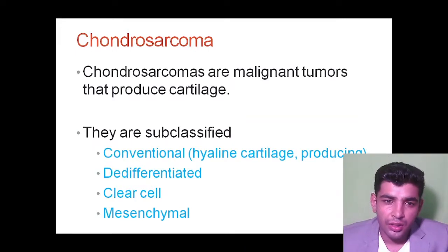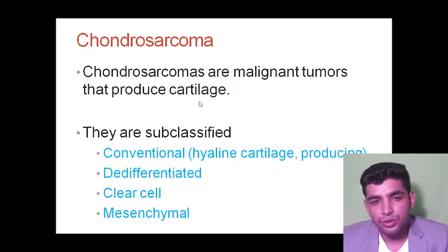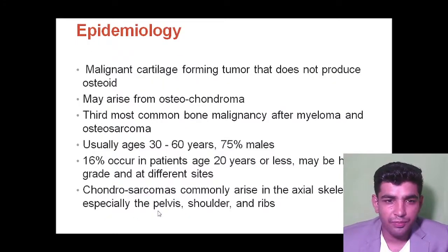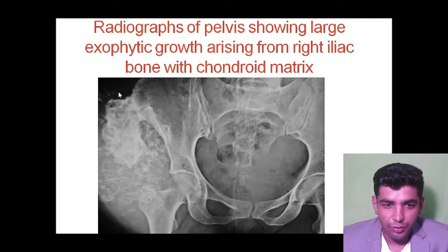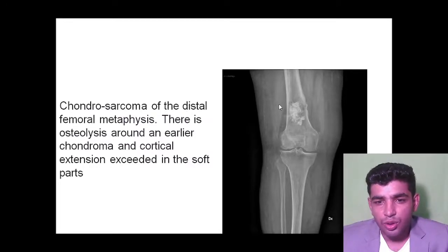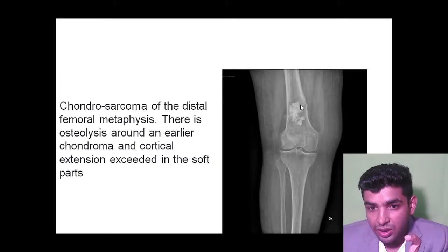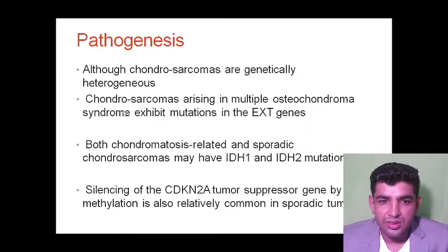Chondrosarcoma is a malignant tumor. If it is sarcoma, it is a malignant case. Chondrosarcomas are malignant tumors that produce cartilage, subclassified into conventional (hyaline cartilage), de-differentiated, clear cell, and mesenchymal types. Radiologically, x-ray of the pelvis shows large exophytic growth on the pelvic bone. Chondrosarcoma of the distal femoral metaphysis shows a diffuse, undifferentiated pattern. Pathogenesis may involve EXT1, IDH1, or IDH2 mutations.